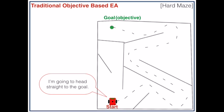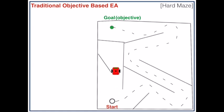Now as I said before, the objective-based EA is solely concerned with moving towards the objective. But as we can see, that's not really the best approach.